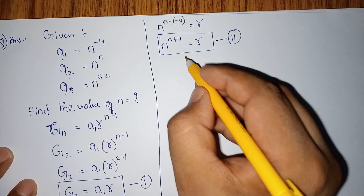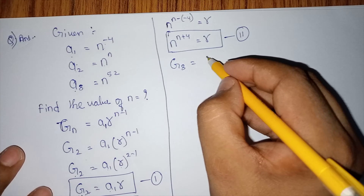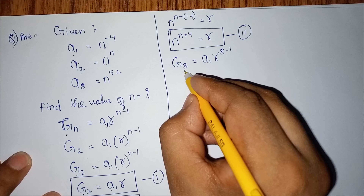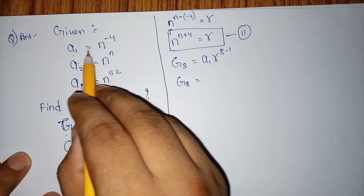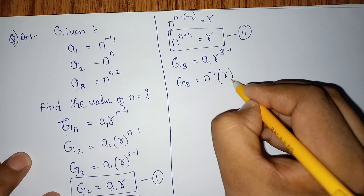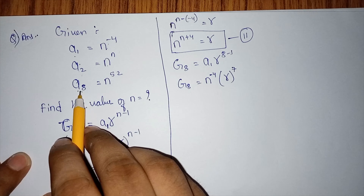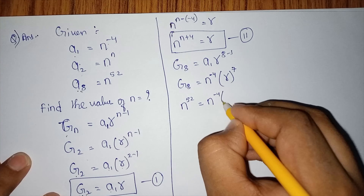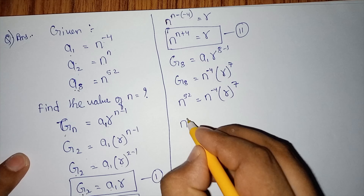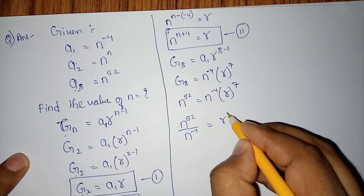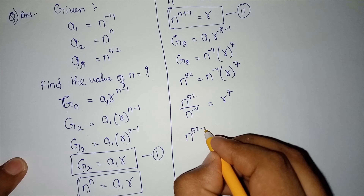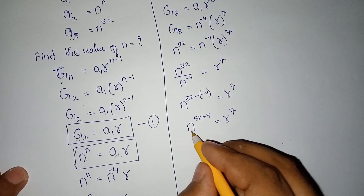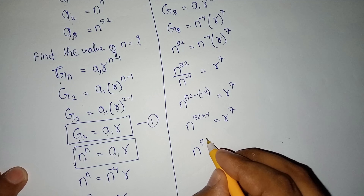Now we solve for the eighth term g8. Using the formula: g8 equals a1 times r to the power 8 minus 1, that is a1 times r to the power 7. Substituting a1 equals n to the power minus 4 and g8 equals n to the power 52: n to the power 52 equals n to the power minus 4 times r to the power 7. Transferring n to the power minus 4 gives n to the power 52 plus 4 equals r to the power 7, so n to the power 56 equals r to the power 7.